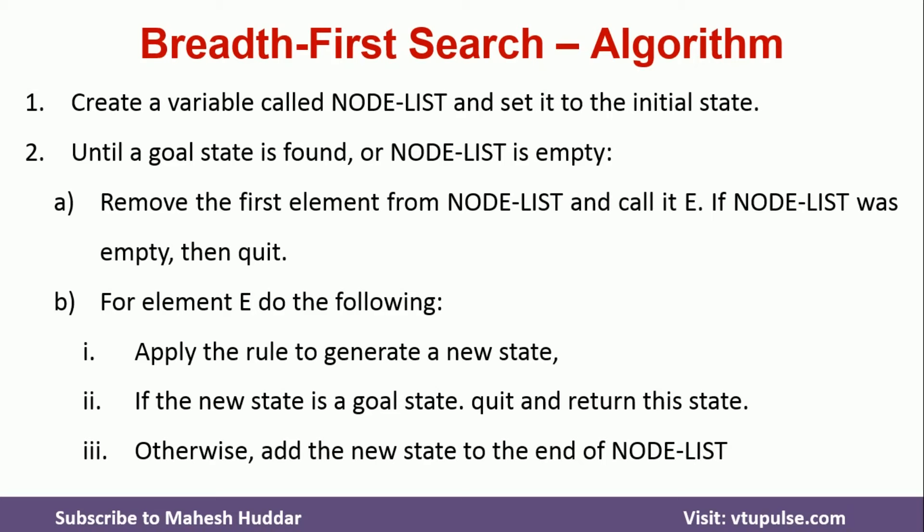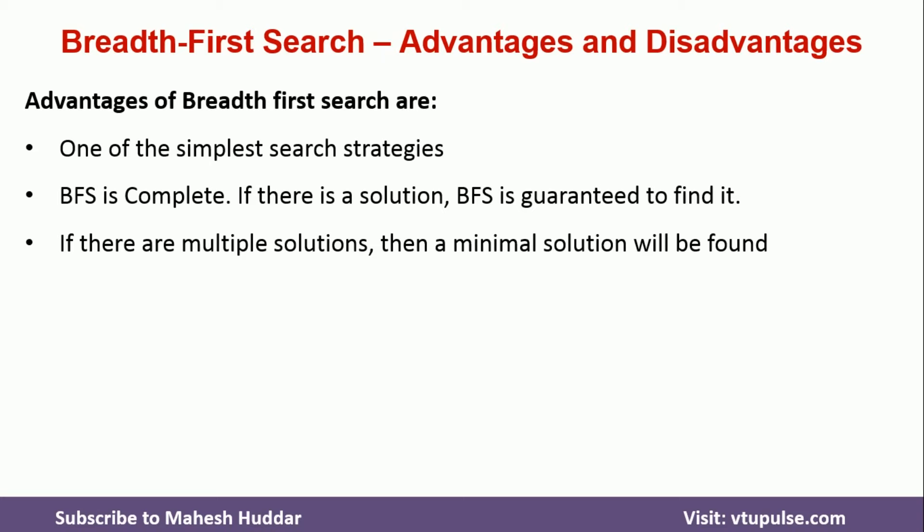Now we will understand the advantages and disadvantages of BFS. The advantages are: BFS is one of the simplest search strategies in artificial intelligence. BFS is complete — that is, if there is a solution, BFS is guaranteed to find it. If there is no solution, it cannot find it, but if a solution exists, it will definitely be found. If there are multiple solutions, the minimal solution will be found using BFS. For example, in the previous case with multiple goal nodes, this algorithm will return the minimal cost path.